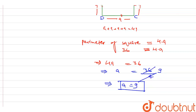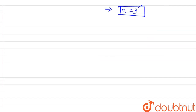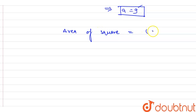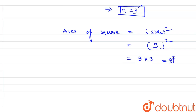And as we know, we have to find the area of the square, and the formula for area of square is side squared. What is the length of side? This is A equals 9 centimeters. So we write 9 squared, and 9 into 9 equals 81 centimeter square. So this will be our answer — 81 centimeter square.